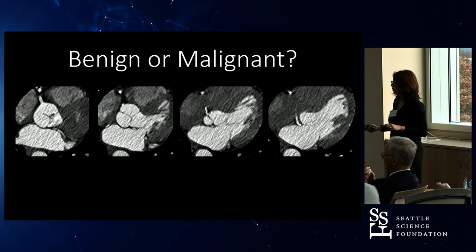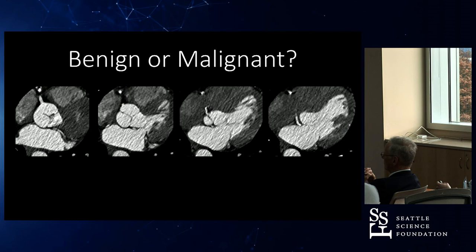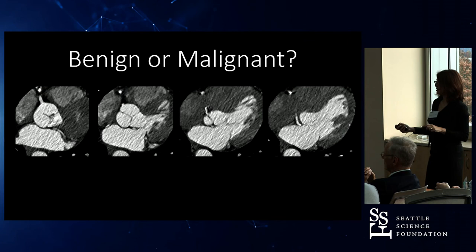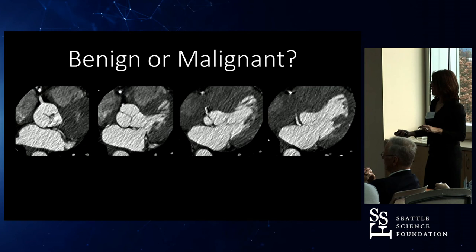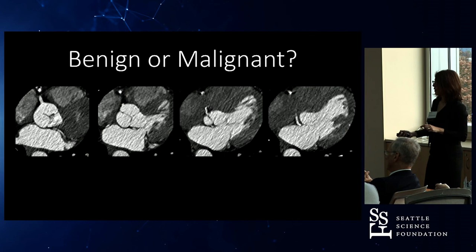Is that malignant or benign? If it goes between... this one's benign, because it does not go between. The right ventricular outflow tract is there. If it goes between here — interarterial — that's malignant. If it goes back here, it's benign. So this one's benign.